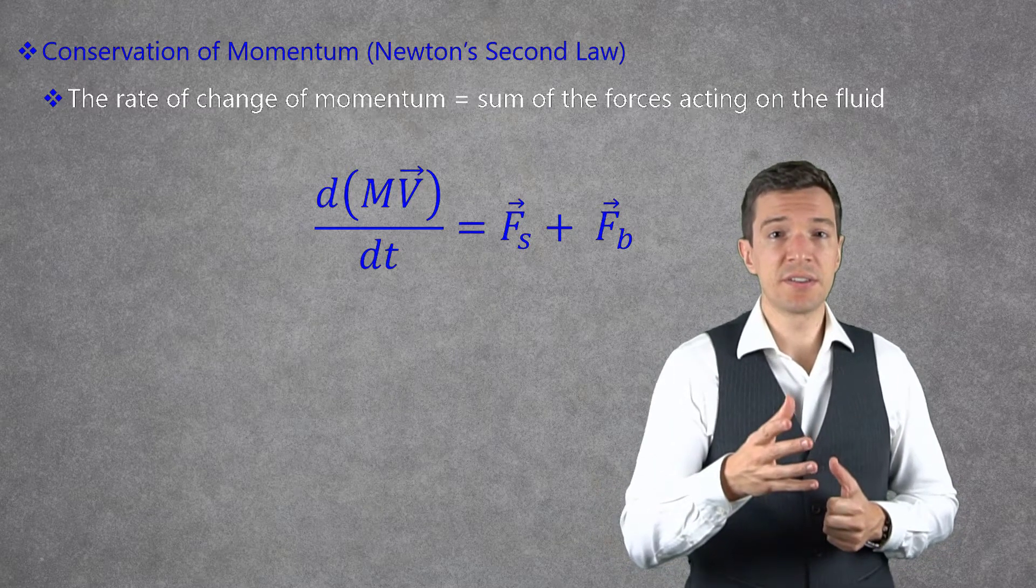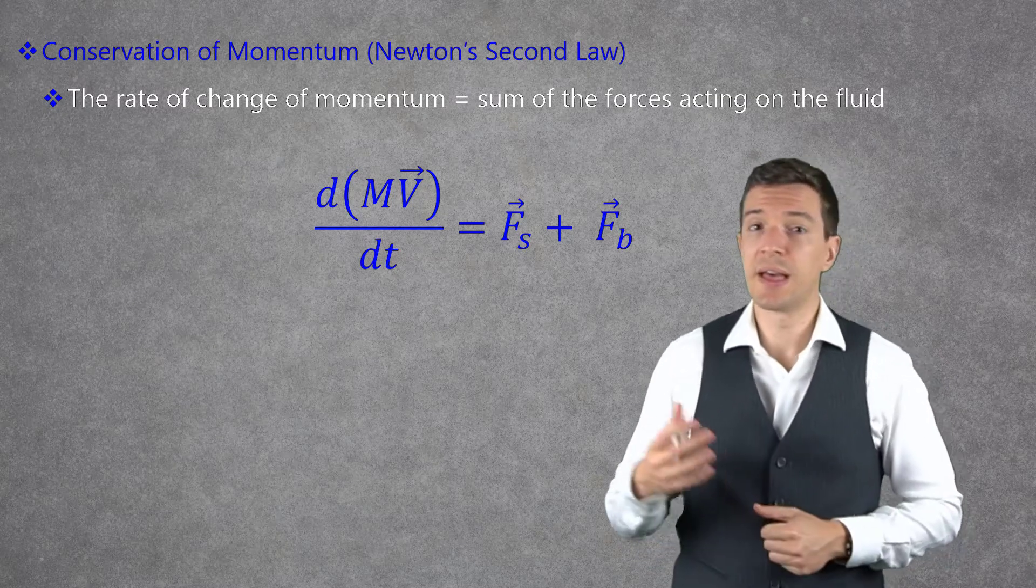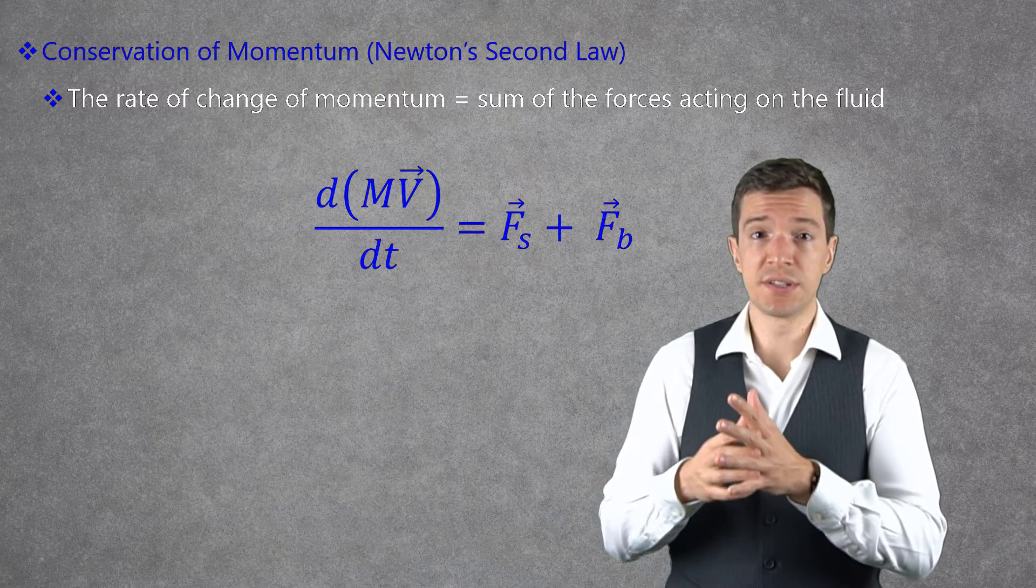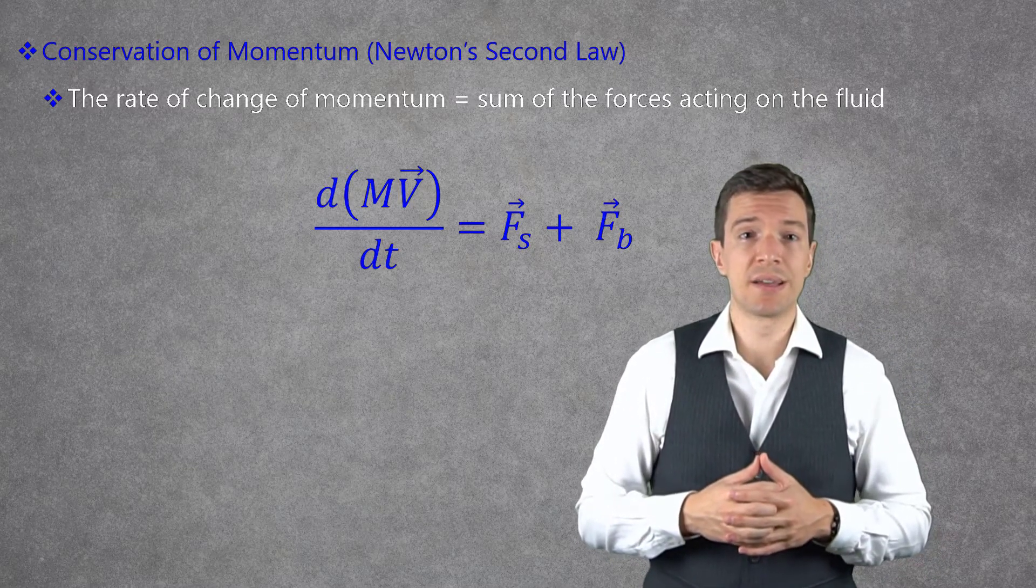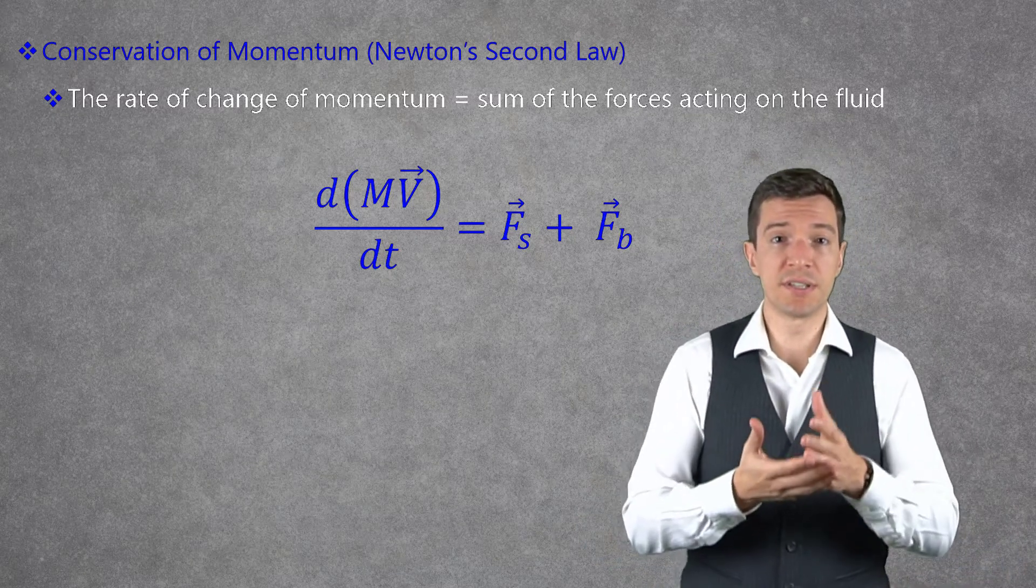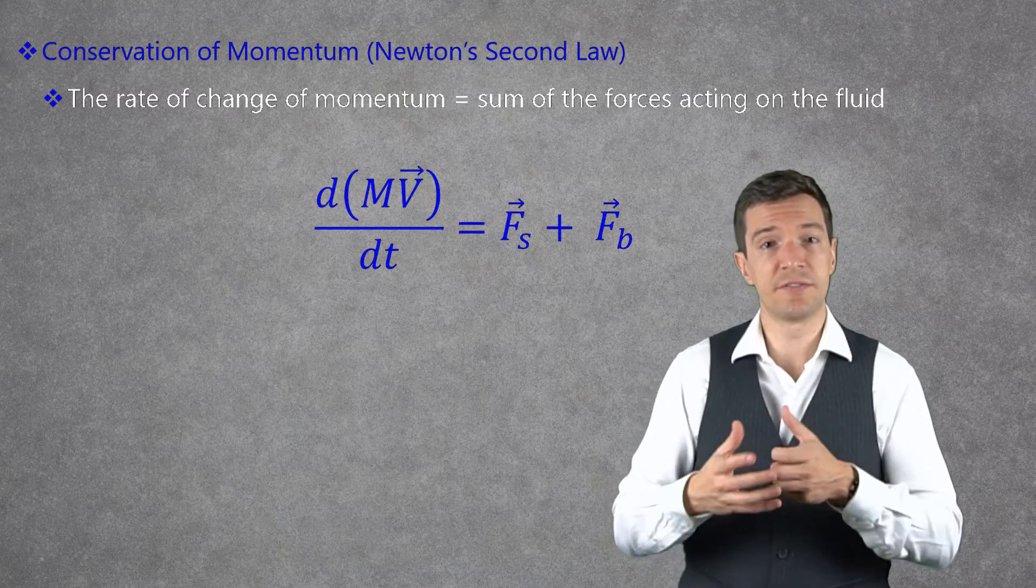The time derivative represents the time rate of change of the parcel's momentum, and the right-hand side terms are the surface forces acting on the parcel's surface, like pressure and friction, and the body forces acting on the parcel's volume, like the gravity effects.